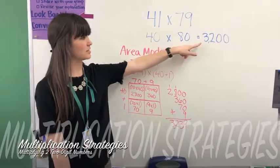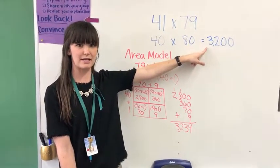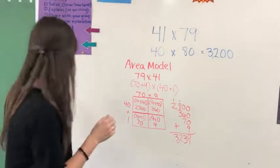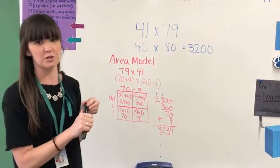Is that a reasonable estimate to 3,200? Yes, it is. They're very close to each other. So the next way we're going to do multiplication is using partial products.